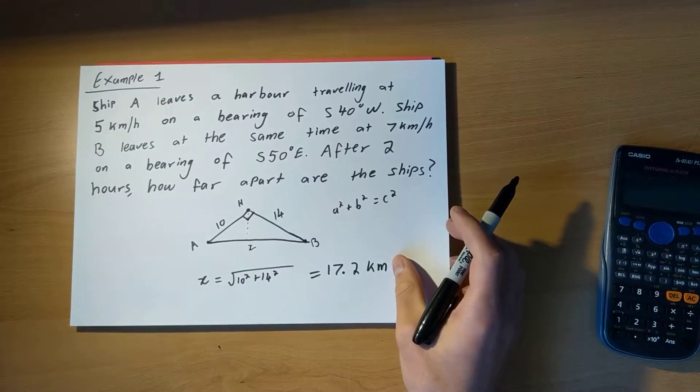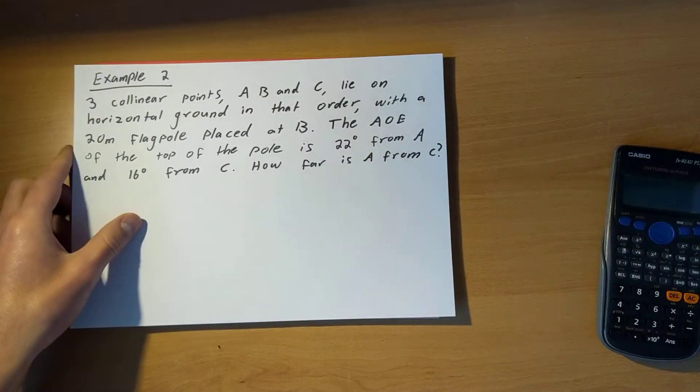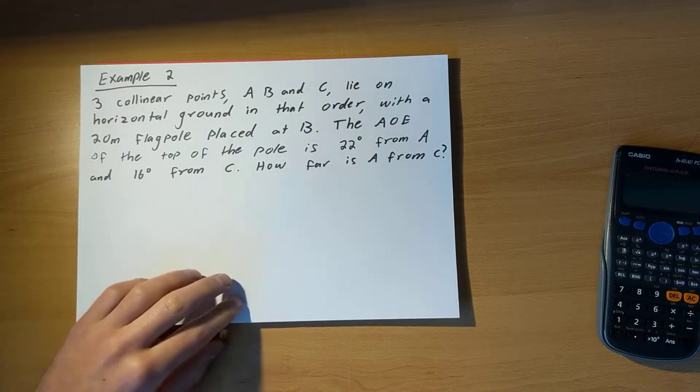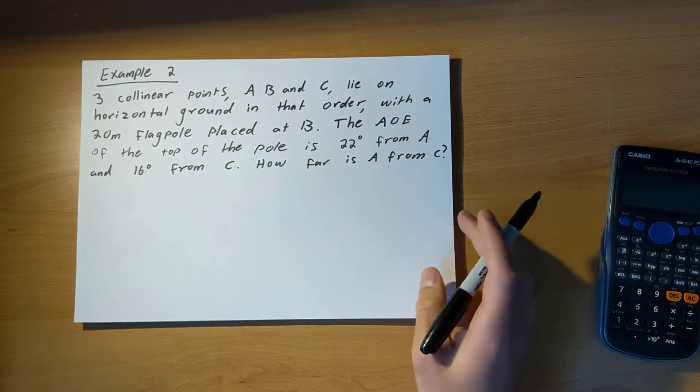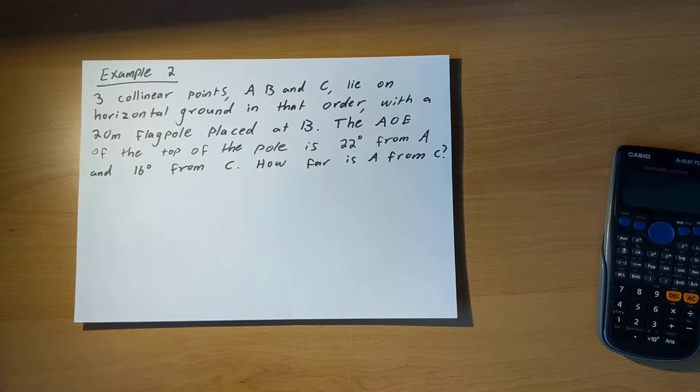Let's do one more example. This one involving angles of elevation and depression. Three collinear points, A, B, and C, lie on horizontal ground in that order with a 20 metre flagpole placed at B.